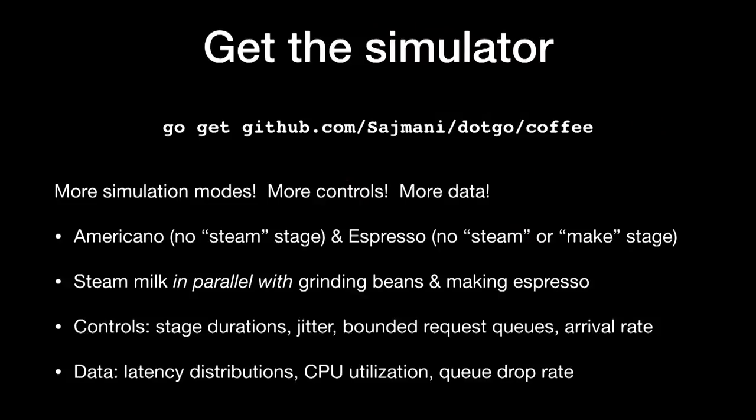One last thing. I encourage you all to download the simulator and play with it. The code is straightforward — less than a thousand lines of Go for everything. Try some more scenarios, dig into the results using Go's profiling tools. The execution tracer is a particularly useful tool here. Or perhaps try modeling a new real-world system in Go. You'll learn more about how that system works, and you'll learn a lot about Go itself. Thank you.